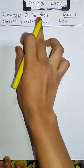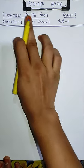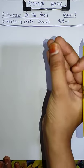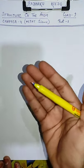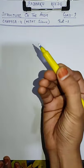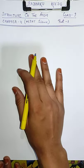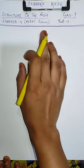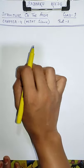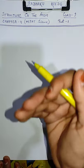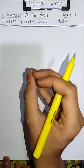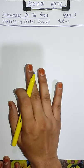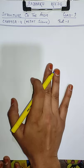Now let's see the structure of the atom. I would like to revise that atom is the smallest indivisible particle, as we have studied. We do not divide the atom further. But as time passed, scientists noticed from different things and realized that atoms are still divisible.